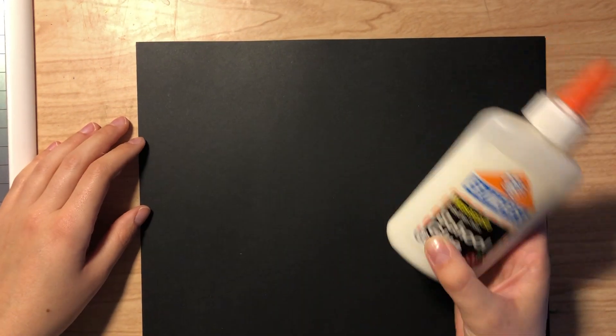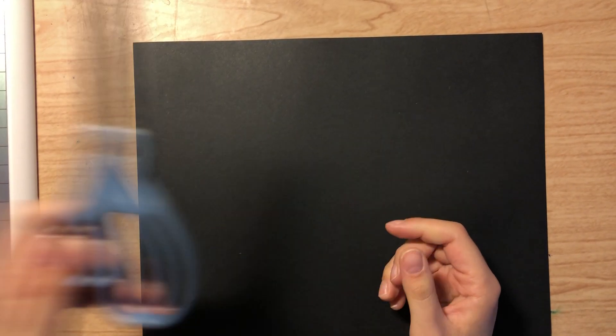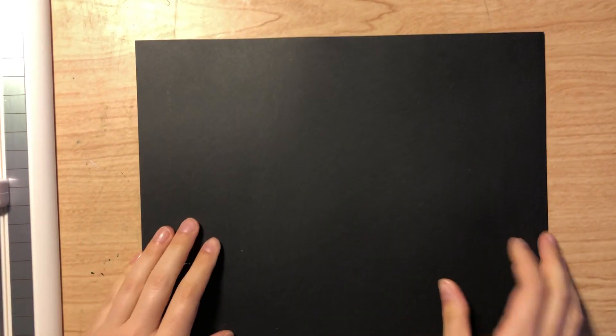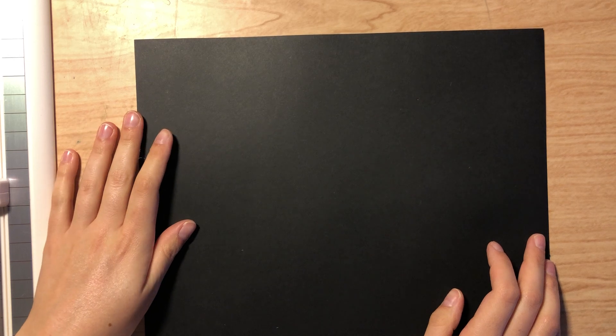And then you'll need your Elmer's school glue, just regular school glue, and then for people at home you can use scissors, but if you have access to like a large paper cutter at home you can also use that too. In class we have a paper cutter, so we'll probably be using that as well.